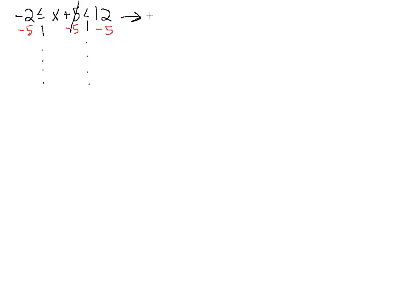Those two terms will cancel. So we have −7, which is less than or equal to x, which is less than 7. Basically, all we did was shift our graph on the number line five spaces to the left. This is just a little bit simpler to graph than x + 5 given these two relationships.